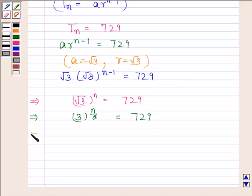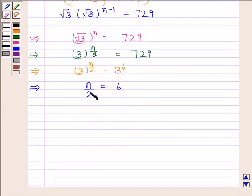And this implies 3 to the power N by 2 is equal to, we can write 729 as 3 to the power 6. On comparing exponents, we find that N by 2 is equal to 6. Now, N by 2 is equal to 6 implies N is equal to 12.